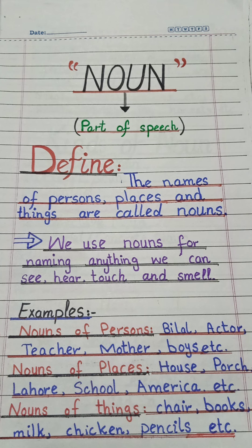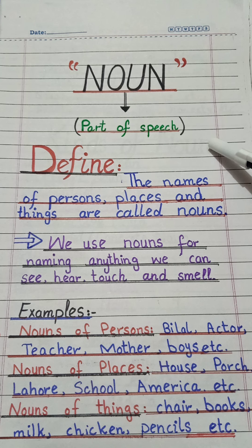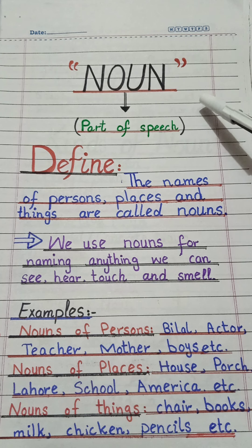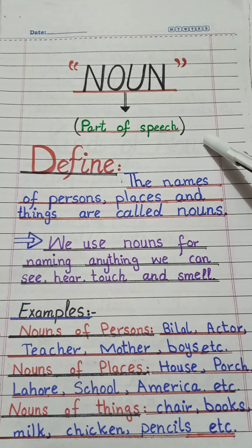Assalamualaikum viewers, welcome back to my channel Beat English. Today our topic is noun. Noun is the first part of speech and we can't make any sentence without noun. What is noun? Everything in the universe which has its name is called noun. Any thing in the world which has its name is a noun — like you and me, we also have our names.